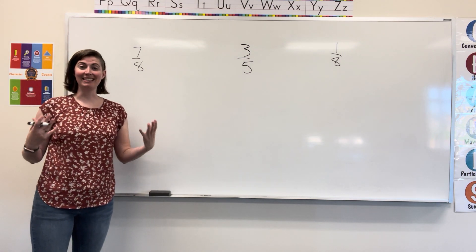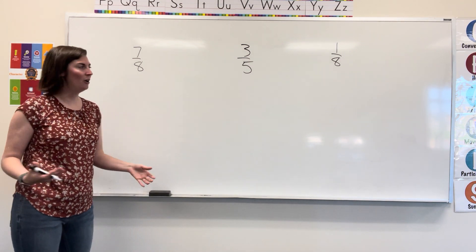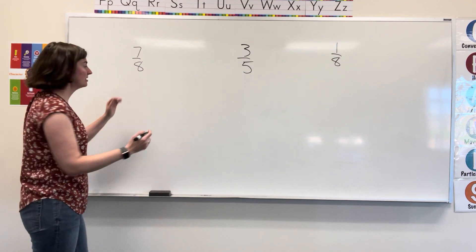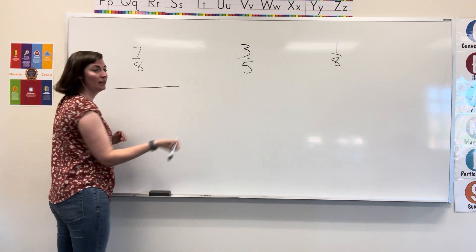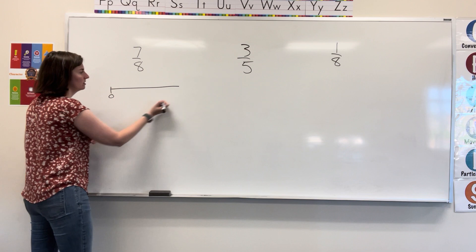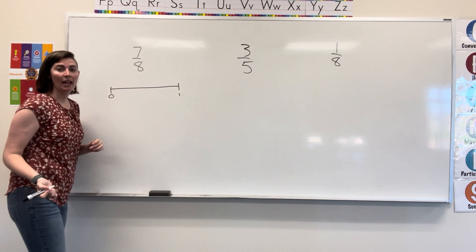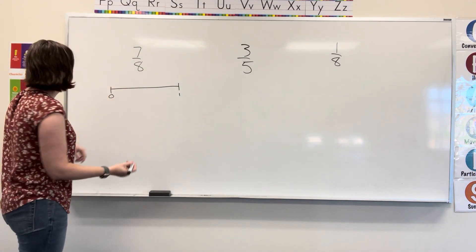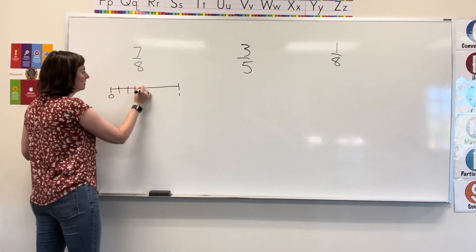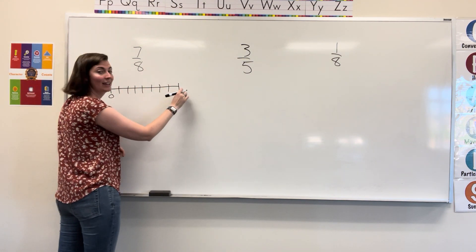Now, our number lines here don't have to be exact because we're kind of just sketching them out. So, I have seven eighths. I'm going to make a really quick number line from zero to one, and I want to break it apart into eight sections. So, I'm going to go one, two, three, four, five, six, seven, eight.